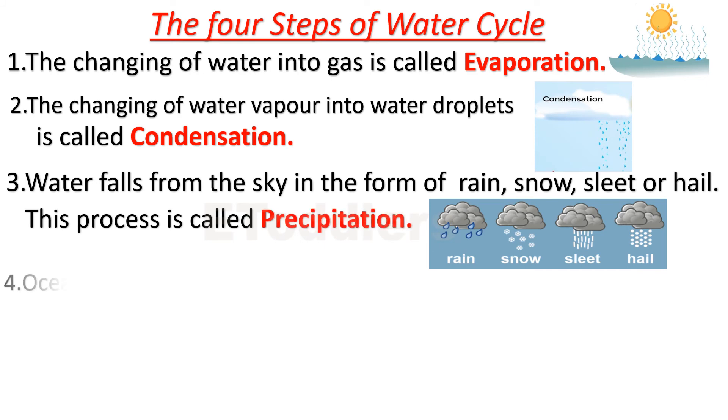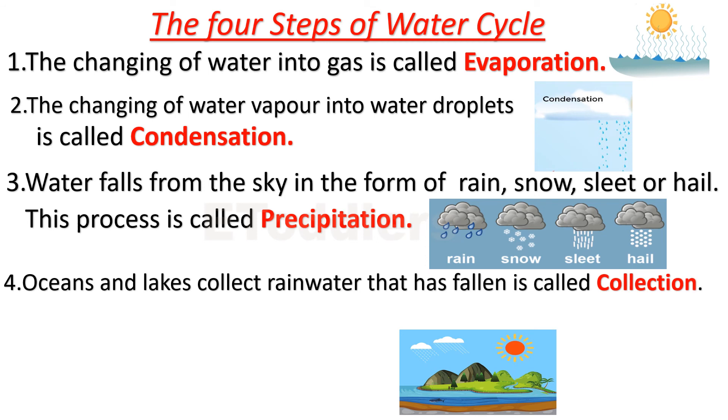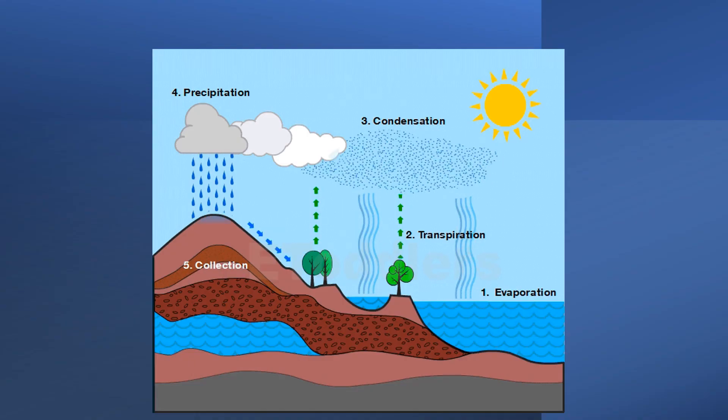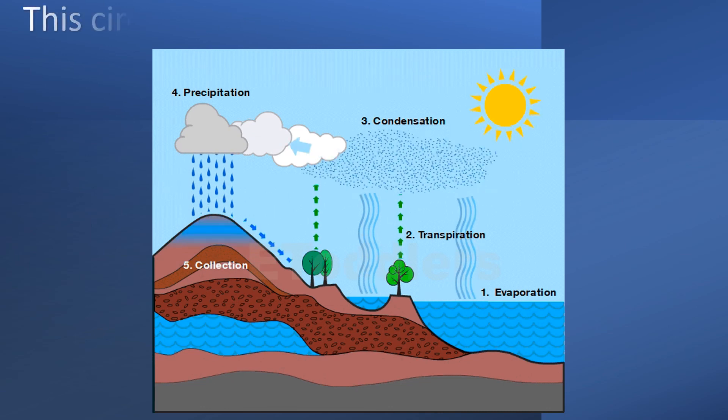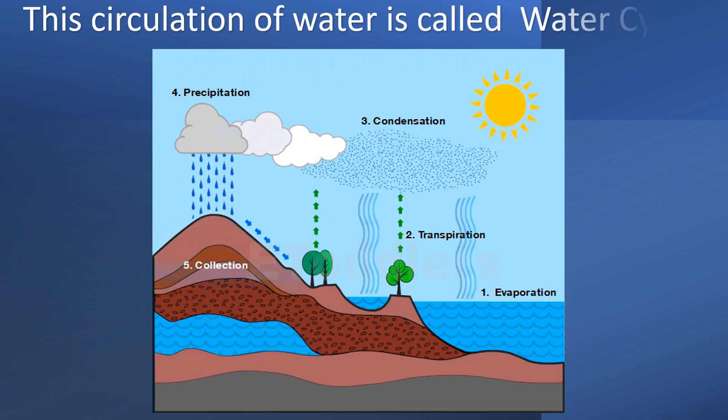Oceans and lakes collect rain water that has fallen, this is called collection. Water evaporates into the sky again and the cycle continues. This circulation of water is called water cycle.